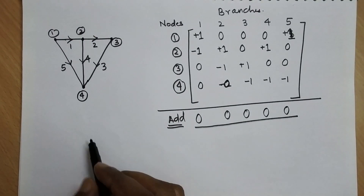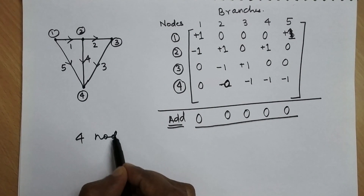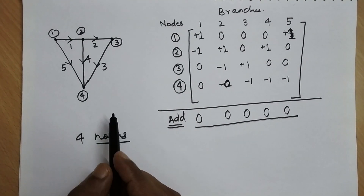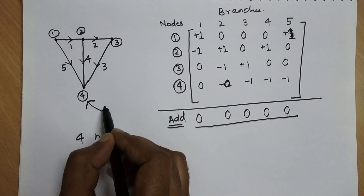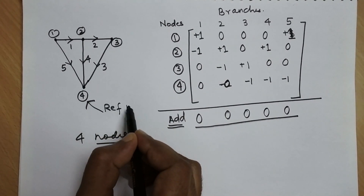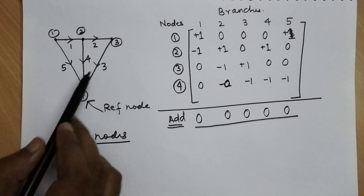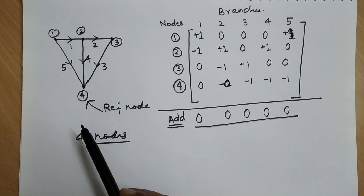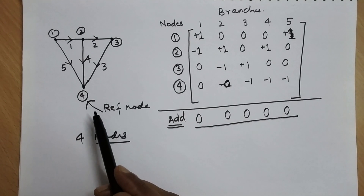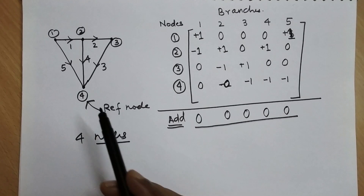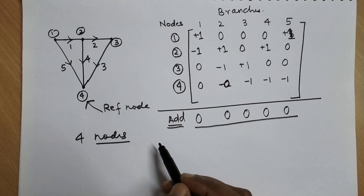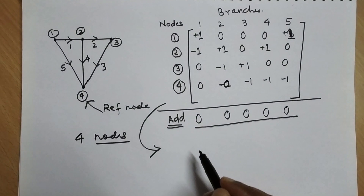Among these four nodes, any node can be considered as the reference node. For example, one can consider node four as the reference node, and all other three become non-reference nodes. So if the total number of nodes equals four, there will be one reference node and three non-reference nodes.